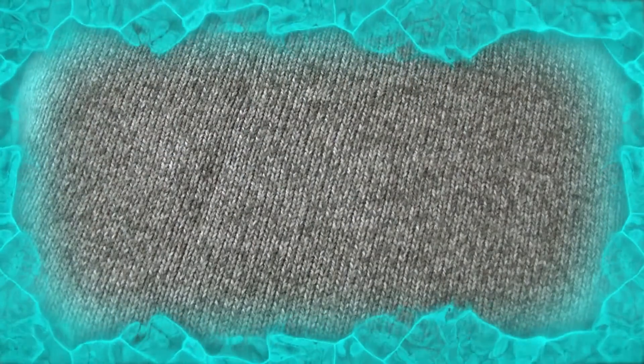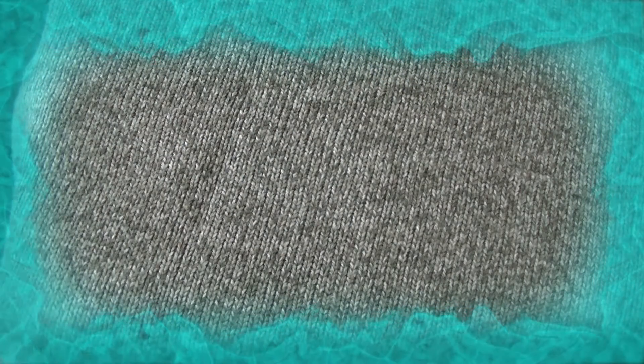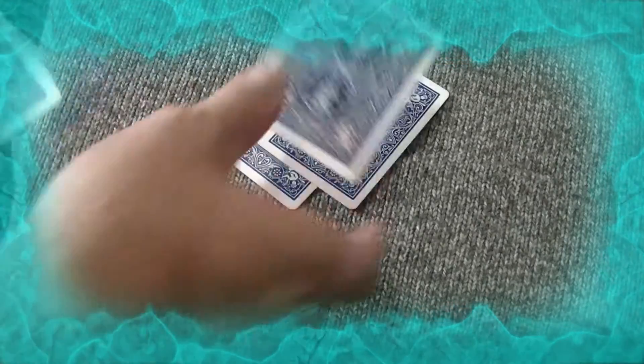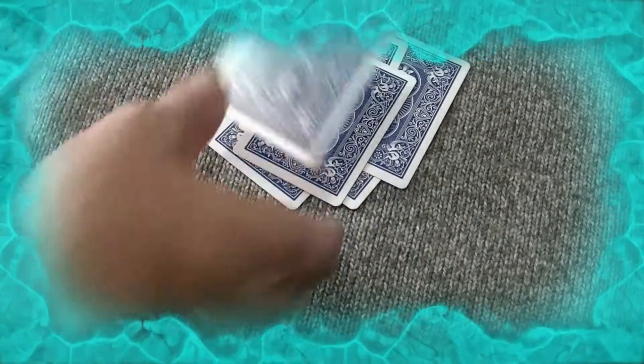You then ask them to pick a number between 1 and 10 and they might say 7. So you say you count down 7 cards, 1, 2, 3, 4, 5, 6, 7 and then you look at the 7th card.